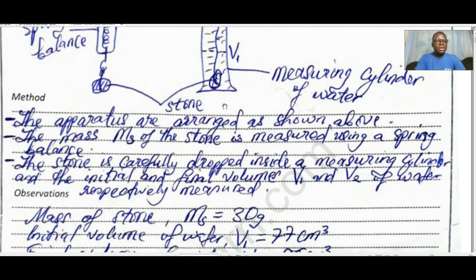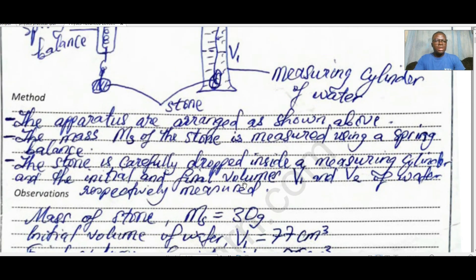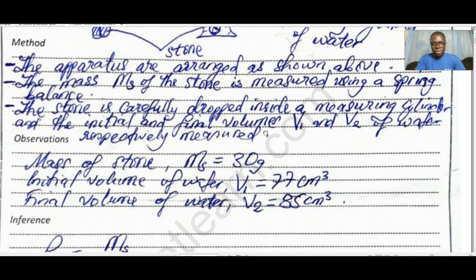To describe your method: the apparatus is arranged as shown above. The mass of the stone is measured using a spring balance. The stone is carefully dropped inside the measuring cylinder and the initial and final volumes are noted. The observation is that you will see a displacement of water — the volume in the measuring cylinder changes, and that change represents the volume occupied by your irregular solid.